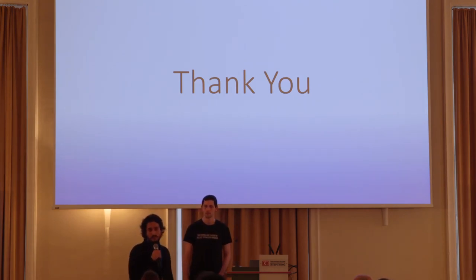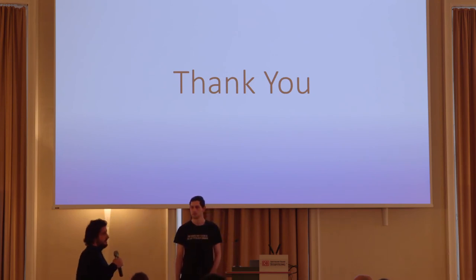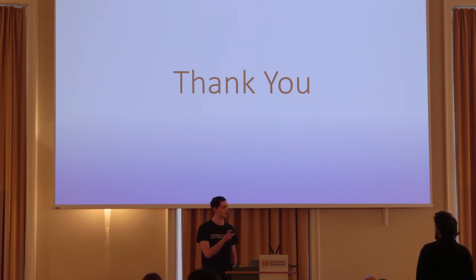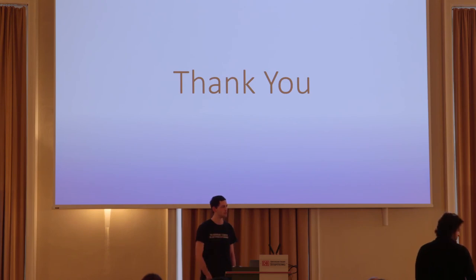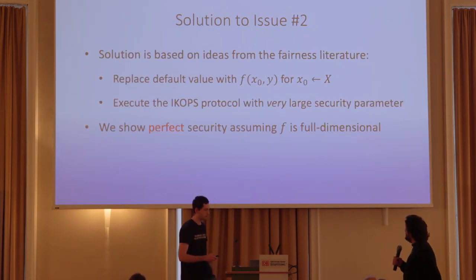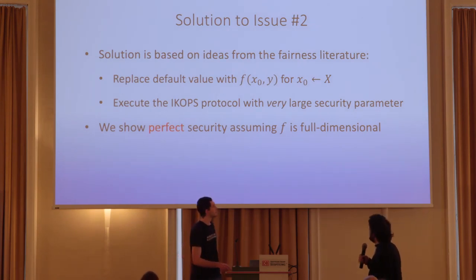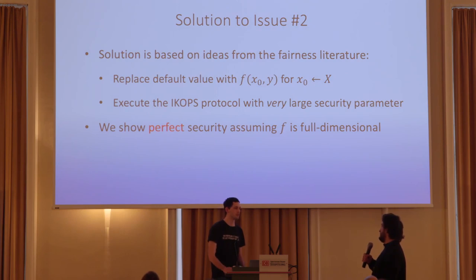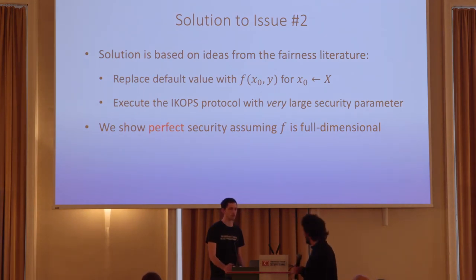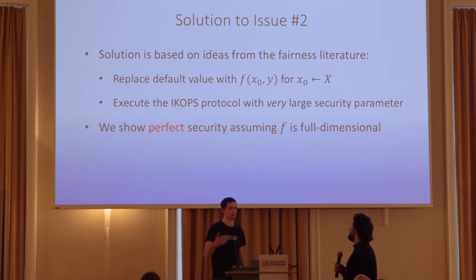Q&A: On what 'very large' means — we wanted the error in the simulation to be epsilon equal to one over the size of the client's domain factorial, so we need a very small error. On replacing the default value with a randomized input: we can use a non-uniform distribution, but it doesn't help us get more functions. The only thing that could help get more functions would be sampling x0 with a probability that depends on the view of the client, whereas here we sample it independently of what the client saw in the protocol.